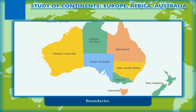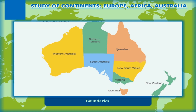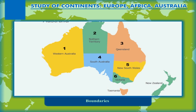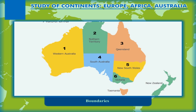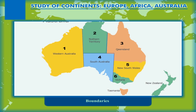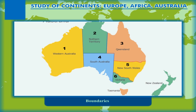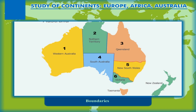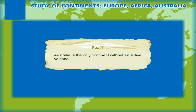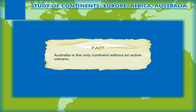The island country of Australia with Canberra as its capital is divided into six states and two mainland federal territories. The state boundaries of Australia are mostly straight lines except those bordering Victoria and New South Wales. Fact: Australia is the only continent without an active volcano.